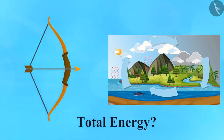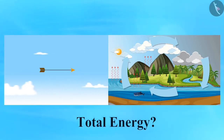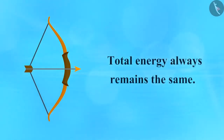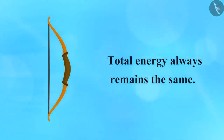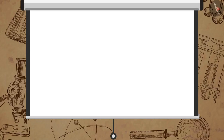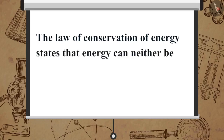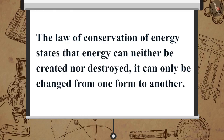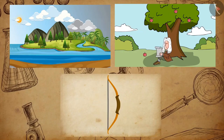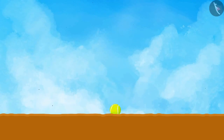But do you know what happens to the total energy of the system before and after the transformation of energy? The total energy always remains the same, even when energy is transformed from one form to another. This is known as the law of conservation of energy, which states that energy can neither be created nor destroyed — it can only be changed from one form to another. This law is applicable in all situations and in all kinds of energy conversions.